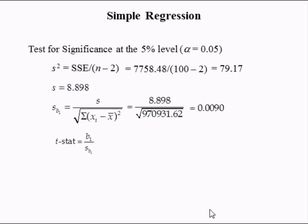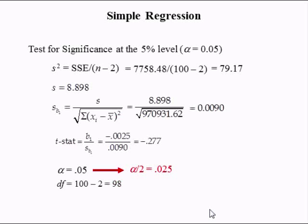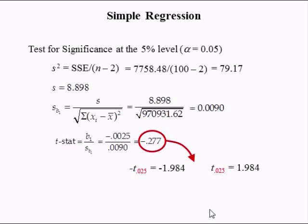The T-stat is the ratio of estimated coefficient B1 to its standard error. The estimated coefficient was negative 0.0025, and with standard error equal to 0.0090, the T-stat is negative 0.277. Since alpha equals 0.05 and this is a two-tailed test, we divide alpha by 2, giving 0.025. The degrees of freedom is 98, and the T-critical value from the table at column 0.025, row 98 is 1.984. Since the T-stat falls between negative 1.984 and positive 1.984, we cannot reject the null hypothesis that the slope coefficient equals 0.